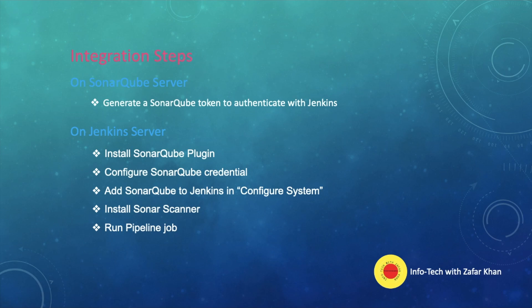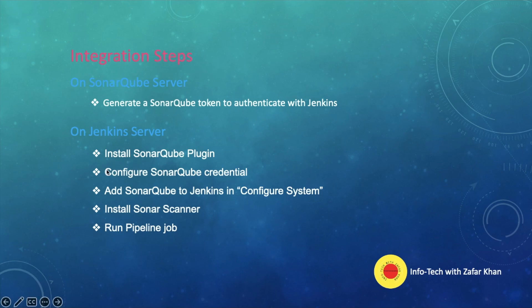On the Jenkins server we will install the SonarQube plugin and configure the SonarQube credential — the credential is simply the SonarQube token configured in Jenkins. Then we will add SonarQube into the Jenkins Configure System and install the SonarQube scanner, which is required to run code analysis. Finally, we will create a declarative pipeline job that sets the Maven path, integrates with GitHub to get the code, builds with Maven, and executes SonarQube for code analysis.